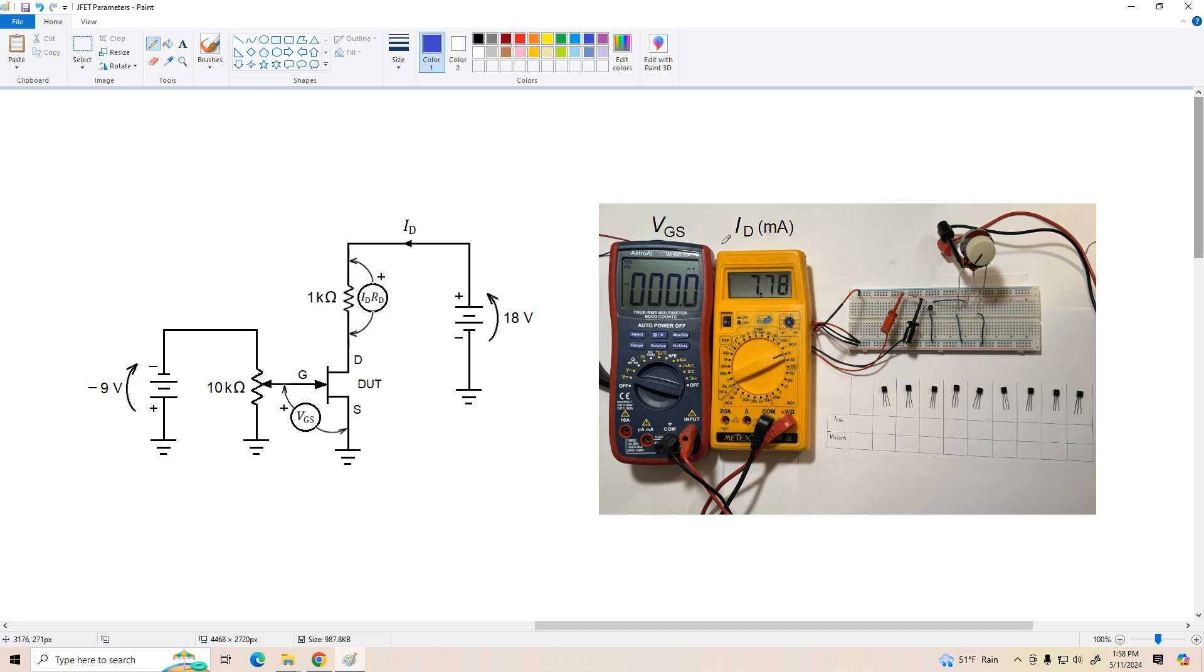And here is my setup. VGS is going to be displayed on this left hand meter, the drain current on the right hand. And you can see here in this particular example with VGS set to zero, I get 7.78 milliamps of drain current. So that would be the IDSS value. Then I would adjust the pot and monitor VGS and ID until the drain current drops to zero. That would be my VGS-OFF value. Here I've got 10 MPF-102s. And we're just going to step through them, measuring these parameters, recording them. I'll average them out and plot the data. And we'll see what we come up with. So let's get on that next.